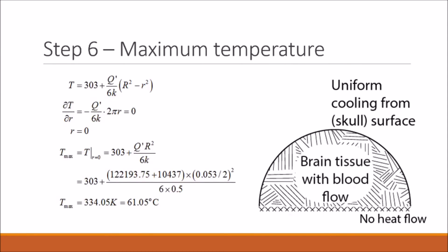So now to find the maximum temperature, we need to go back to calculus. So first, we take our temperature profile and find our extrema by taking the first derivative and setting it equal to zero. And it turns out that our extrema occurs, or our maximum temperature occurs, at a radius of r equals zero.